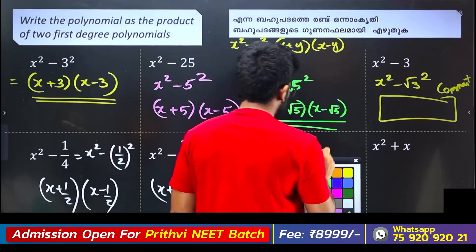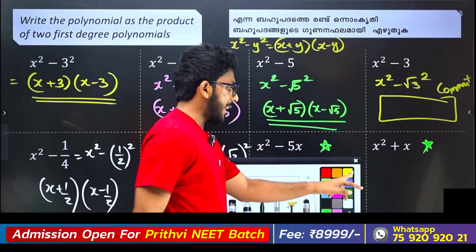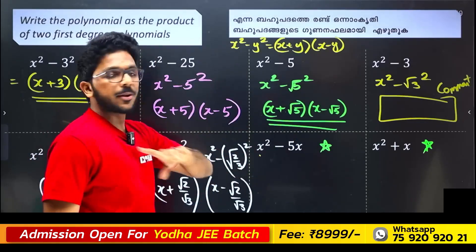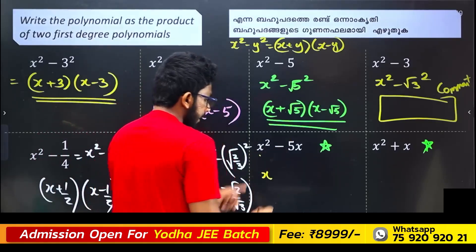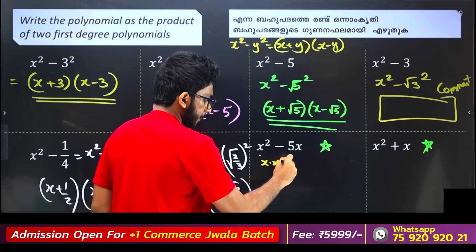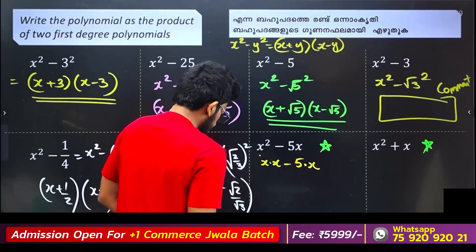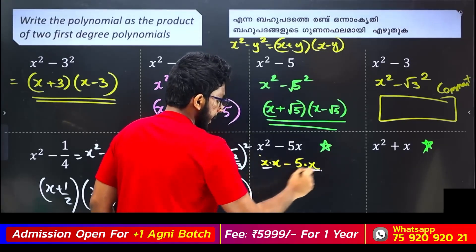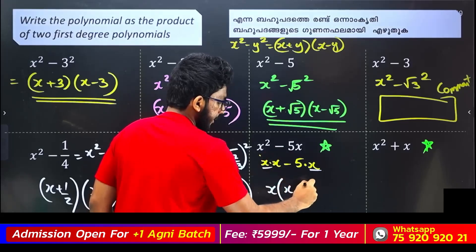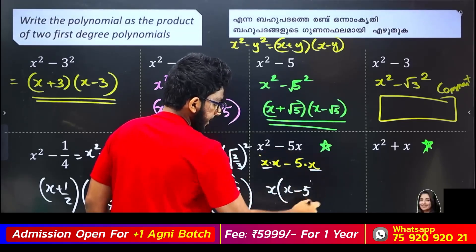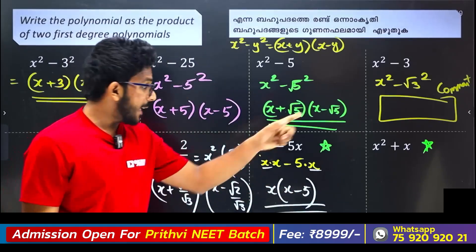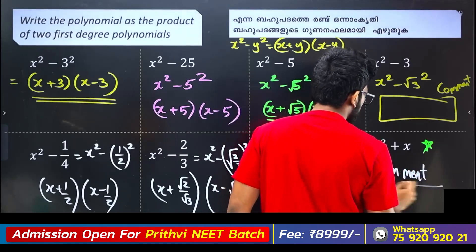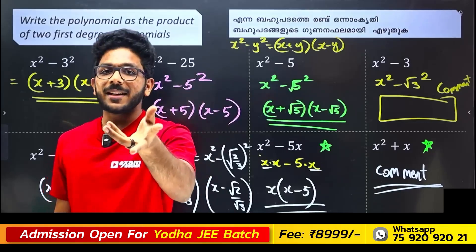These two questions are very important. We have two first-degree factors. What is common? We should do x² and x is to multiply x. Here is 5 into x — x is always the common factor. We write x into x minus 5. This is x into x minus 5. This is the first degree and this is the first degree.